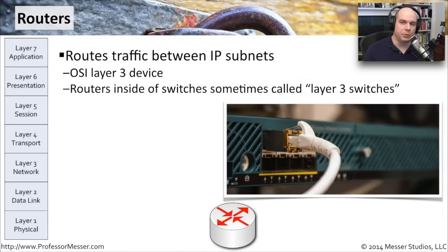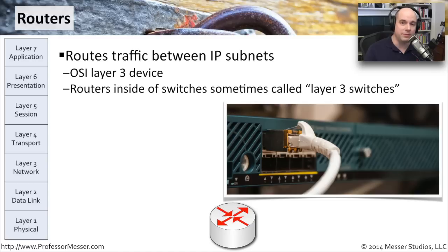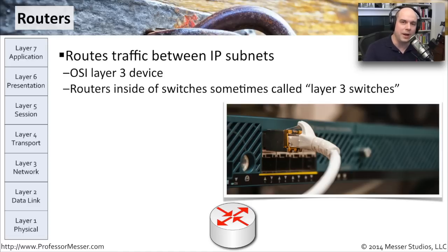Since switches operate at layer two, everybody is on the same subnet. To separate our network into other pieces, we need something to move up to a higher level — OSI layer three — and that would be a router. Routers are usually in the center of the network, connecting all of these different switches to each other, perhaps connecting an internet connection as well. Anytime you have to connect two different IP subnets, you need a routing function somewhere — on a standalone device, or as a software or hardware module within a switch. You'll sometimes hear the term a layer three switch, which is really a router embedded inside of a switch.